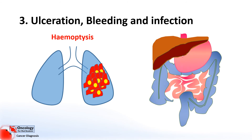Another example might be passing blood in the stool or in bowel motions. If you have a tumour that's causing bleeding in the lower parts of the gut you might get fresh blood passing, but if you get a tumour in higher parts of the gut the blood might get digested as it moves down, and this forms something called melena — which is digested blood that has a very thick black appearance.